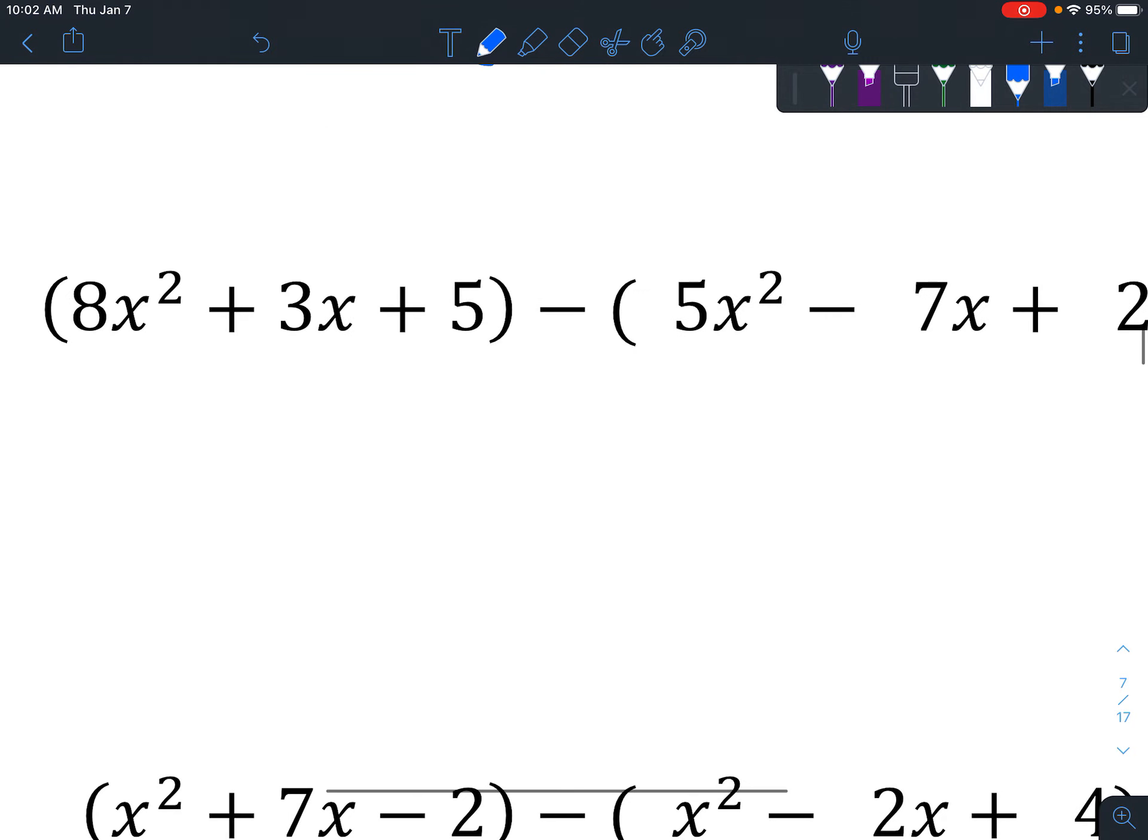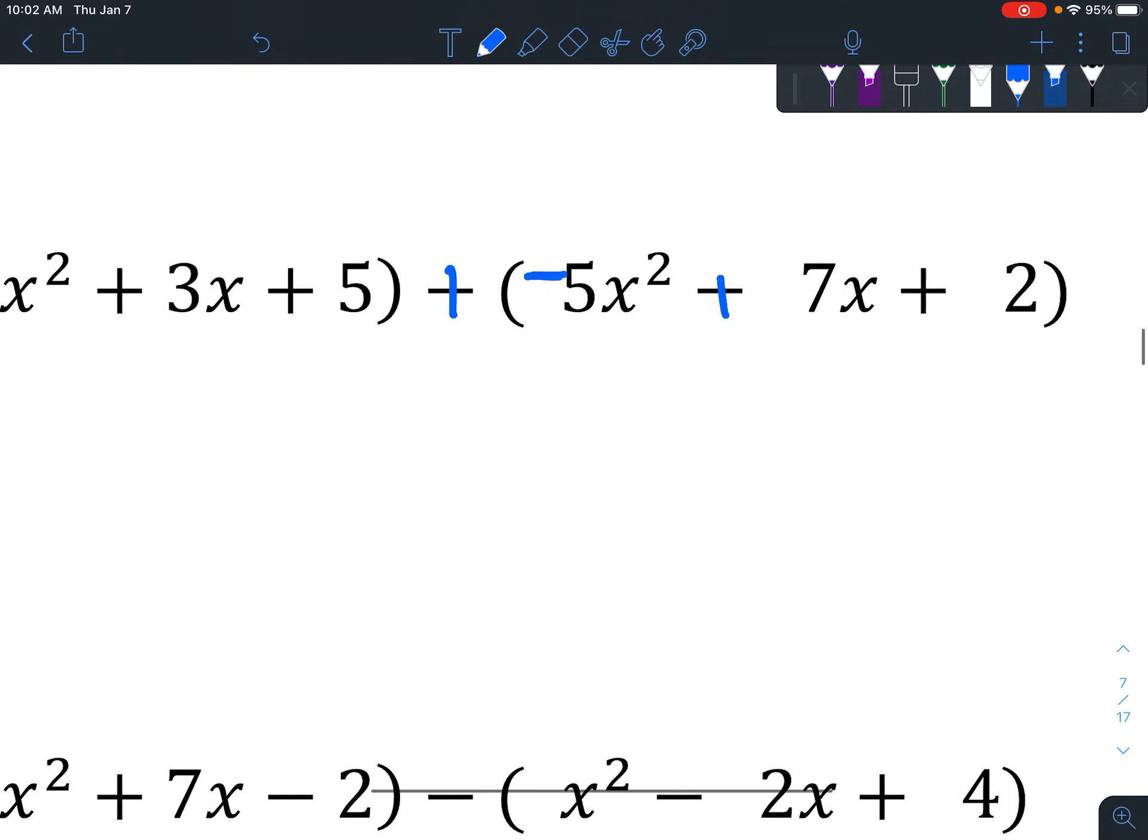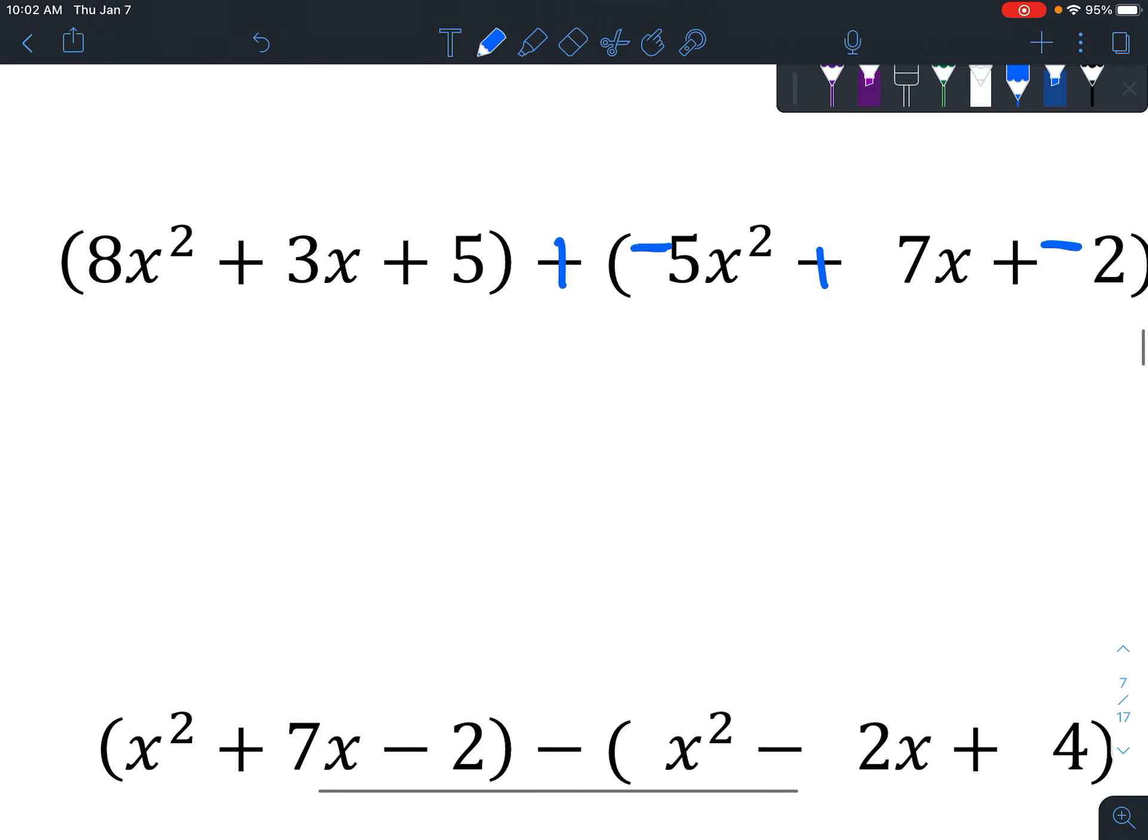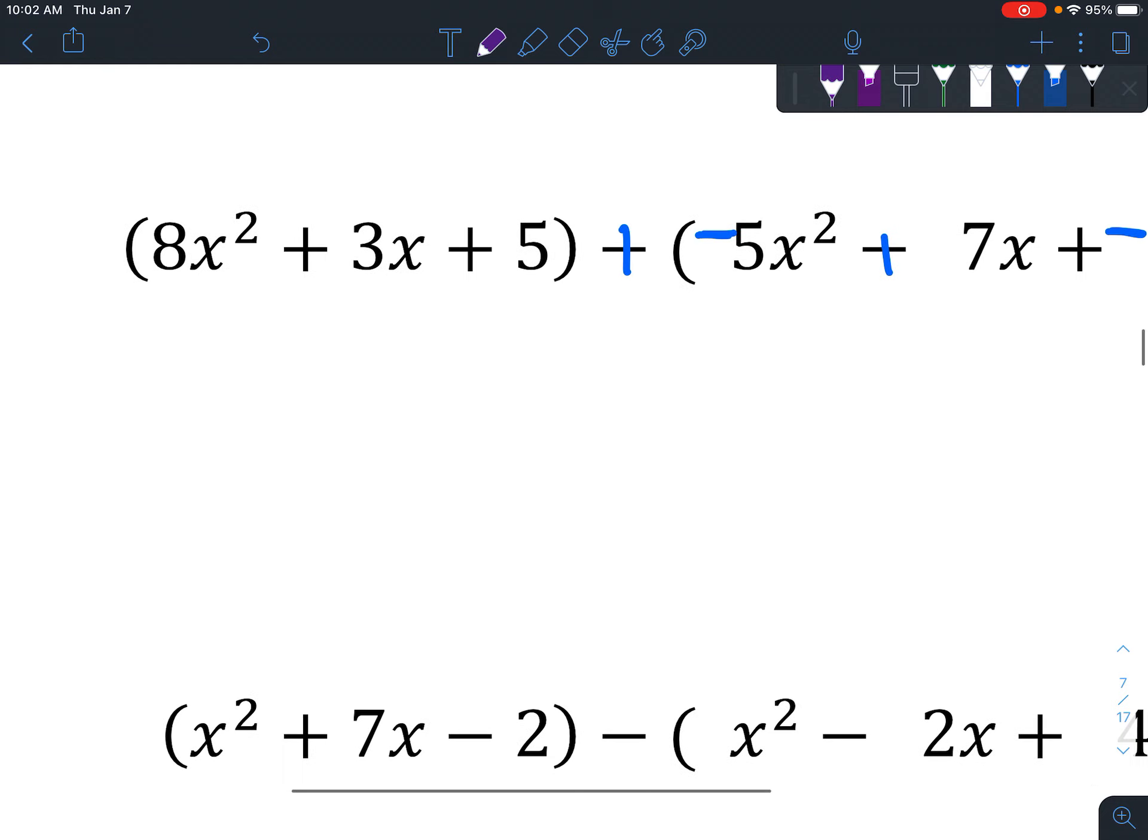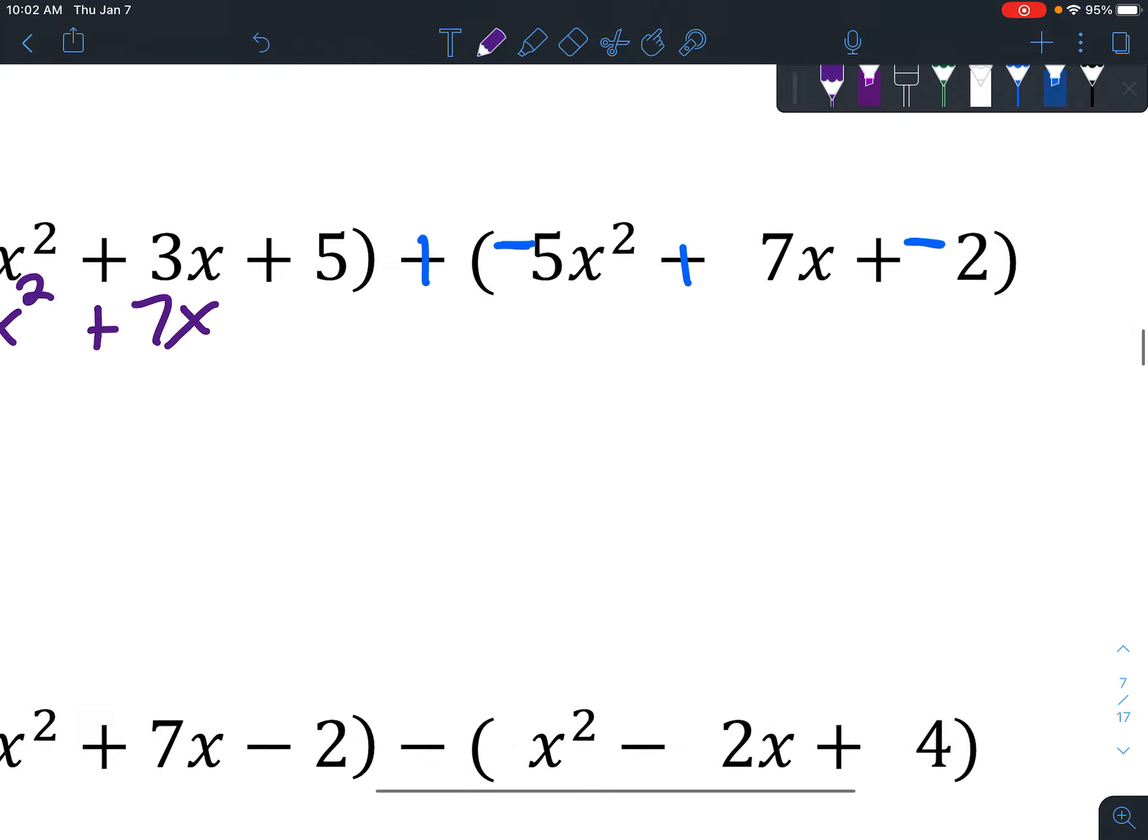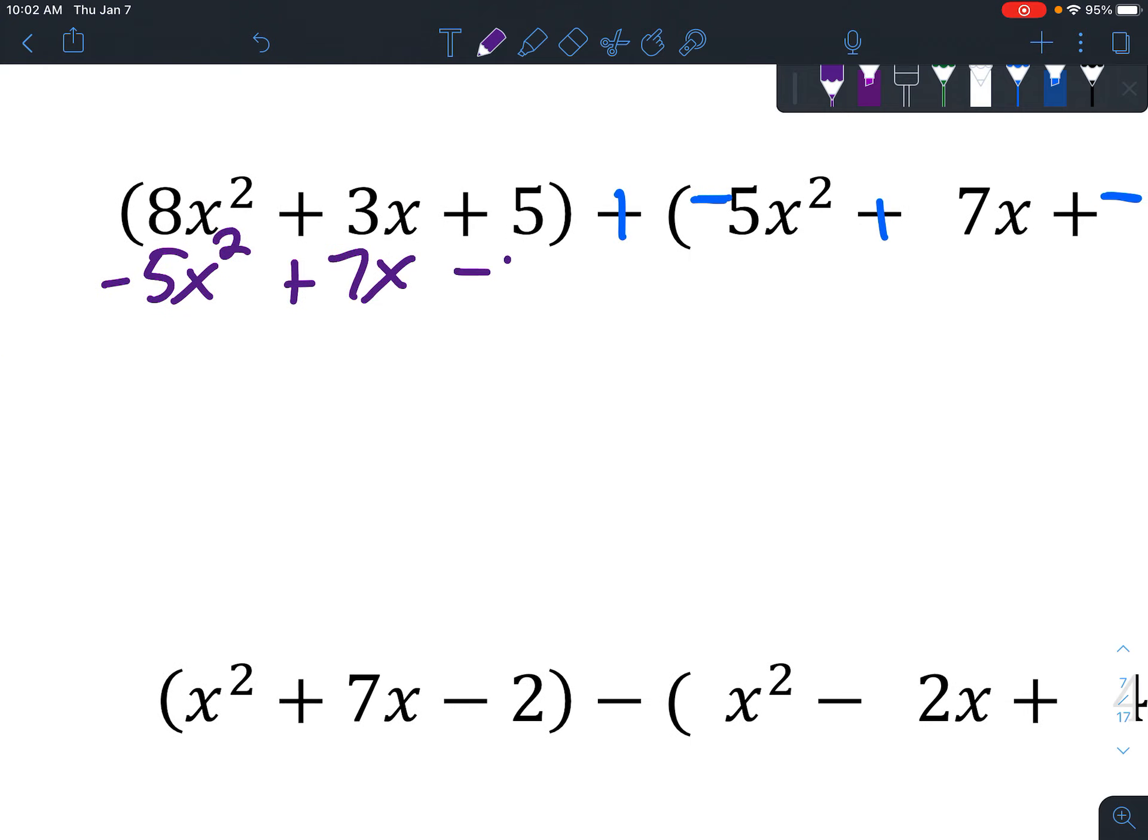Next example. Go ahead and change your subtraction to add the opposite. And so if it's already a subtraction, change it to an addition. If it's an addition, change it to a subtraction. And we're going to recopy underneath. So we're going to put the negative 5x squared here, the positive 7x here, and then this negative 2 right here.